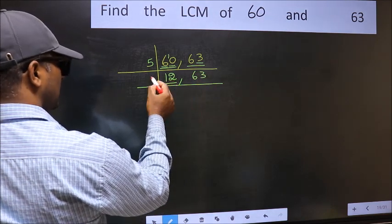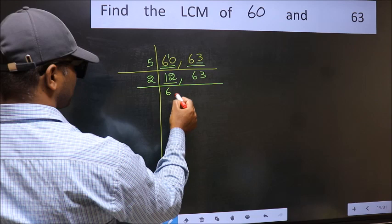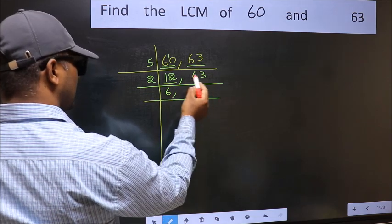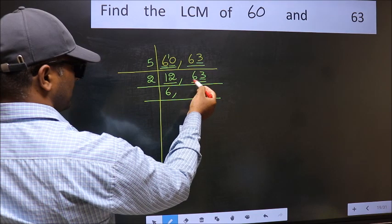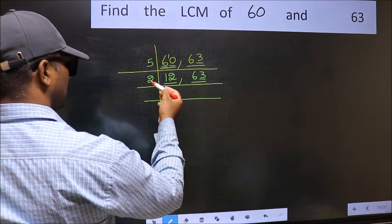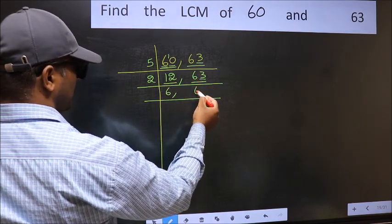Now here we have 12. 12 is 2, 6, 12. The other number, 63. Last digit 3, not even, so this is not divisible by 2. So you write it down as it is.